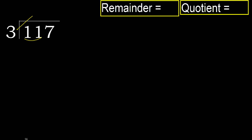3 multiplied by which number is nearest to 11 but not greater? 3 multiplied by 4 is 12 — 12 is greater. 3 multiplied by 3 is 9 — 9 is not greater. Subtract 2, next.